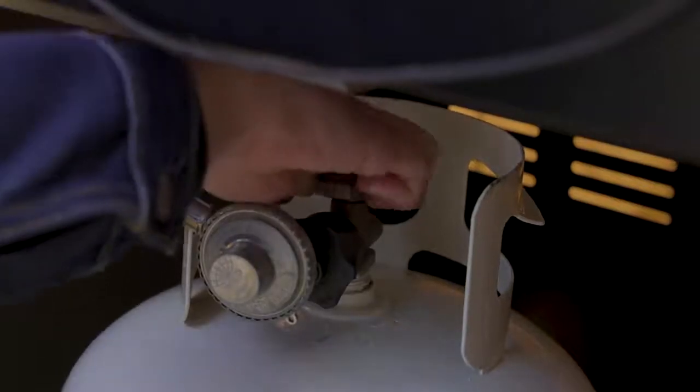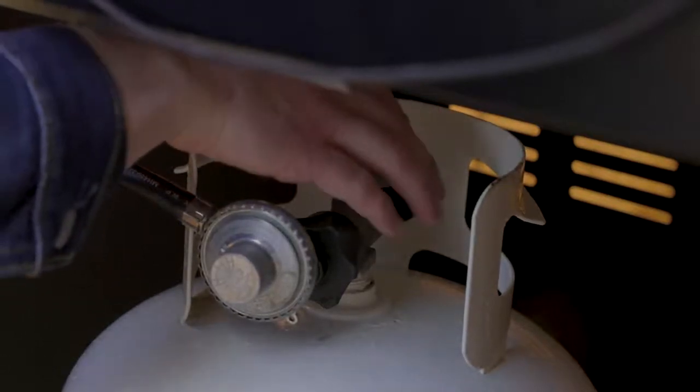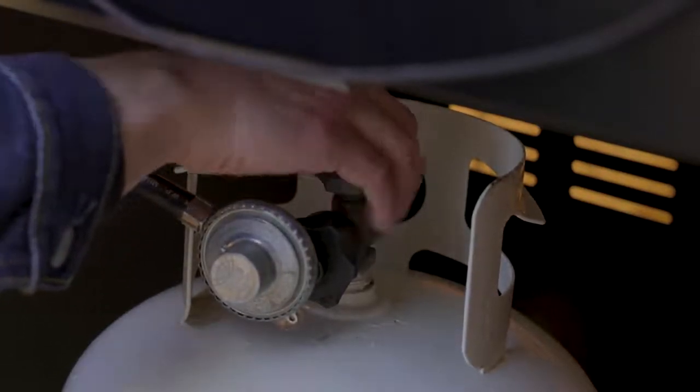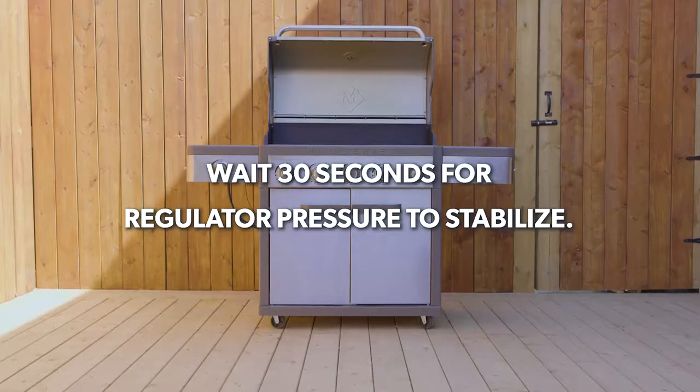Slowly open the LP cylinder shutoff valve. Opening the shutoff valve too quickly can also activate the flow-limiting feature. Wait approximately 30 seconds for the regulator pressure to stabilize.